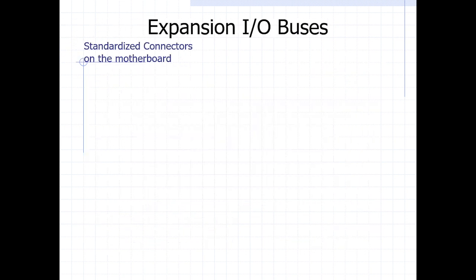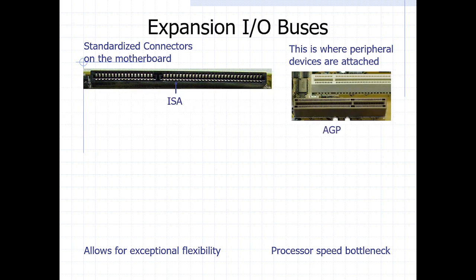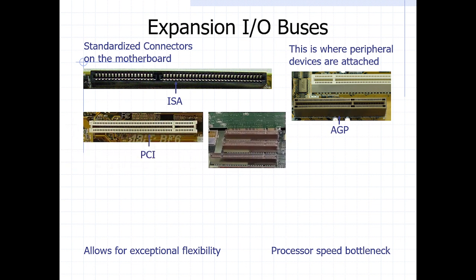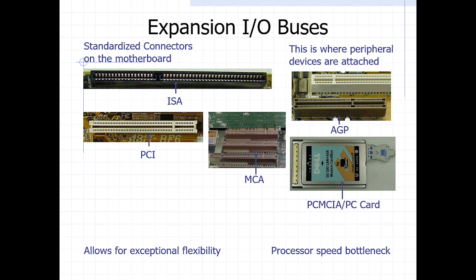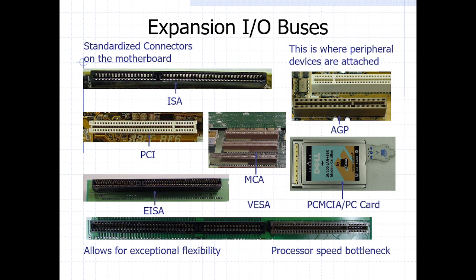We also need to understand the expansion buses. Apart from the ISA, we had different other categories of expansion IO buses — we had the MCA, the VESA, the EISA, the PC Card, and the ISA card. These additional expansion IO buses are part of the system buses, but they are obsolete — overtaken with time in terms of speed and processing capabilities — and are not used within the current computer system.